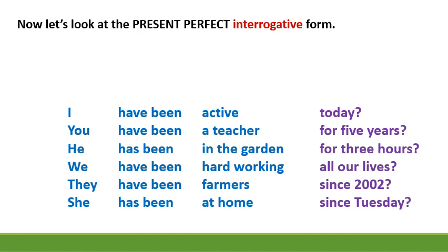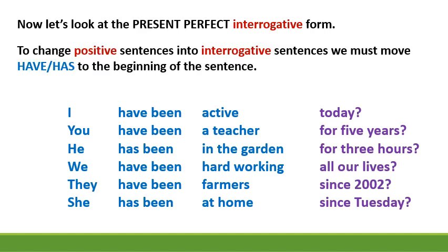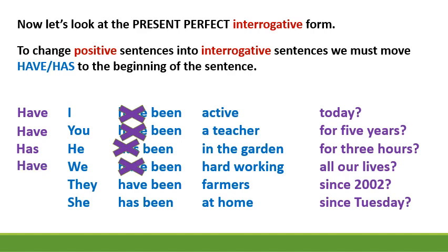Now let's look at the present perfect interrogative form. To change positive sentences into interrogative sentences, we must move has or have to the beginning of the sentence. Have I been active today? Have you been a teacher for five years? Has he been in the garden for three hours? Have we been hardworking all our lives? Have they been farmers since 2002? Has she been at home since Tuesday?